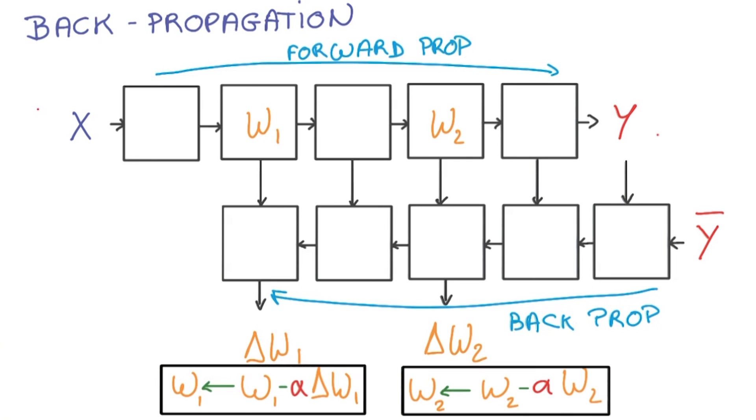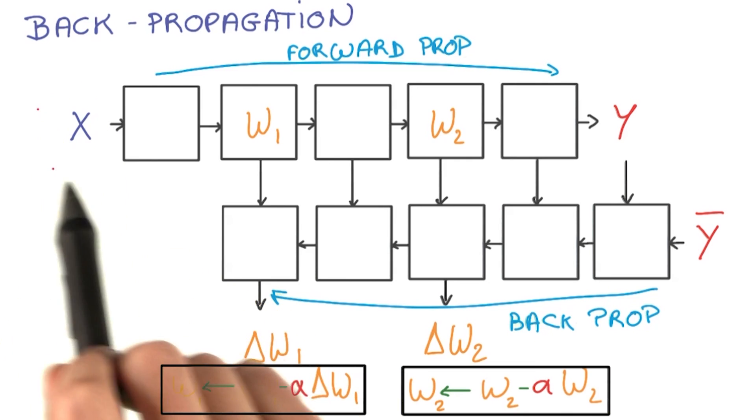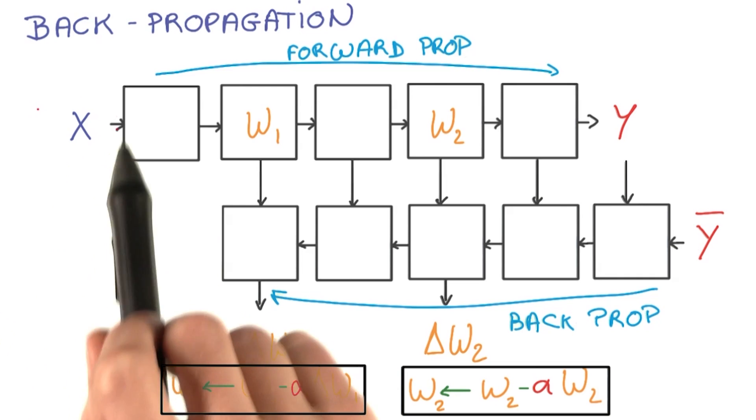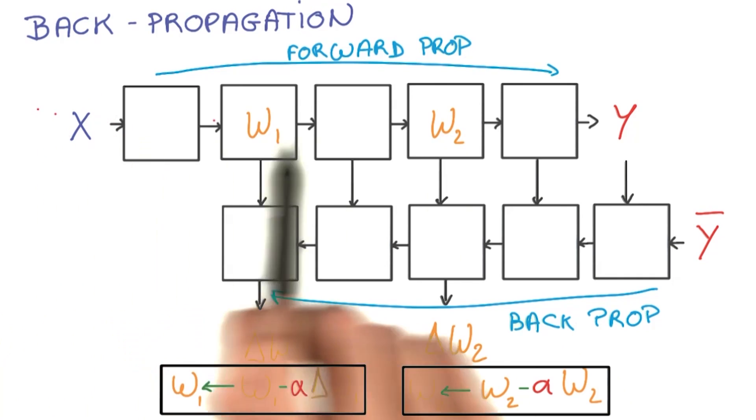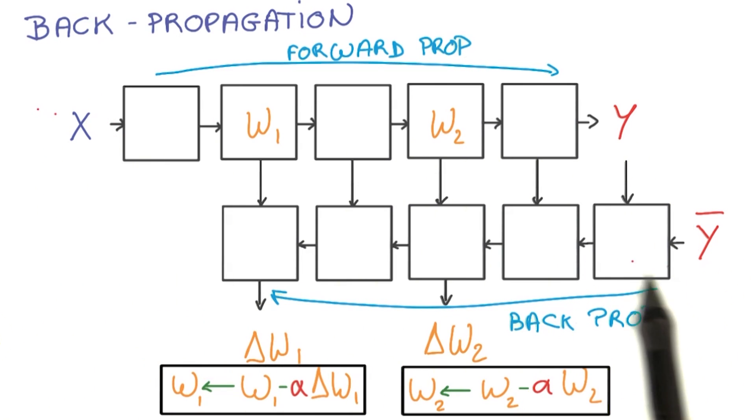So to recap, to run stochastic gradient descent, for every single little batch of your data in your training set, you're going to run the forward prop, and then the backprop.